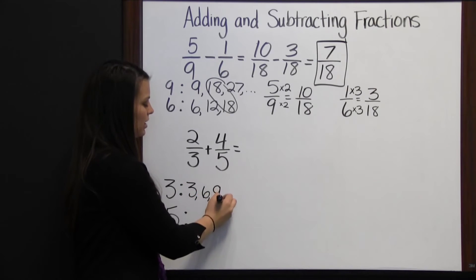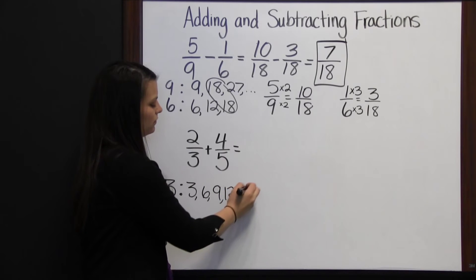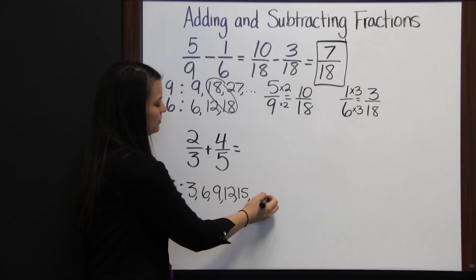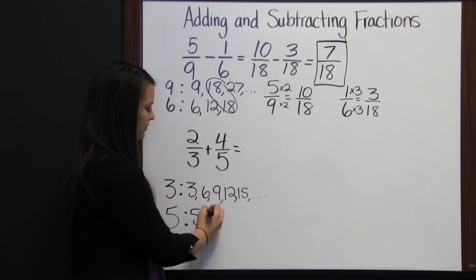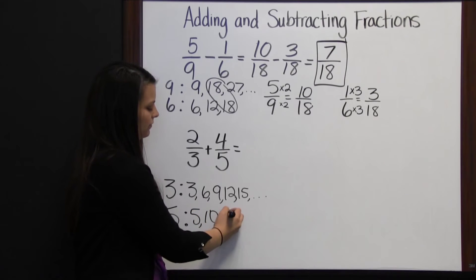Three, six, nine, twelve, fifteen, and my multiples for five: five, ten, fifteen.